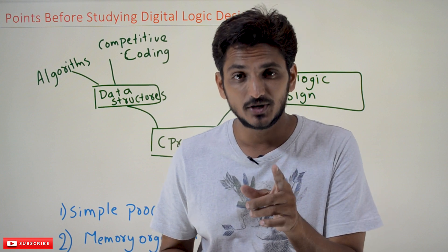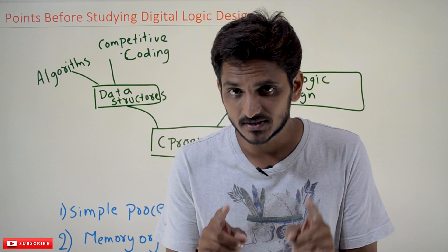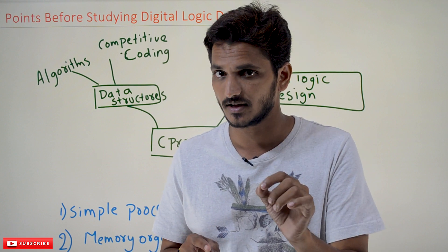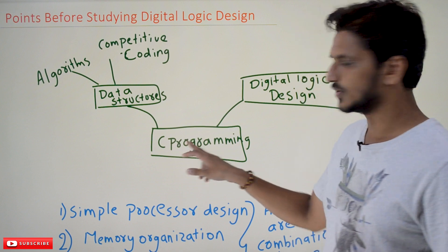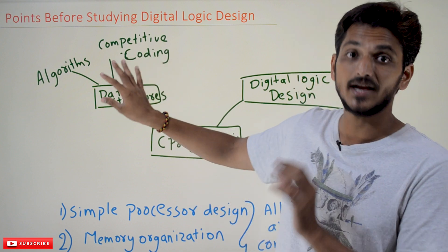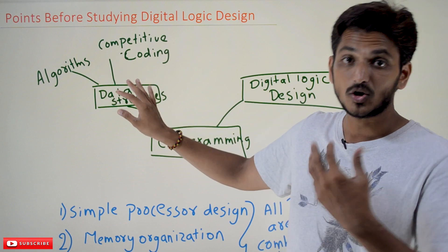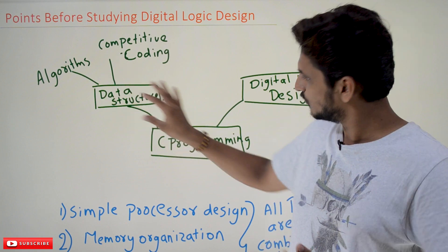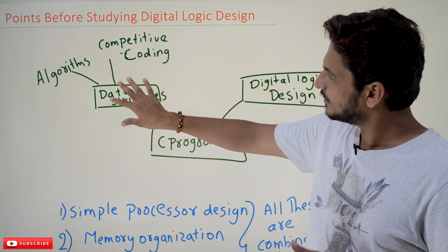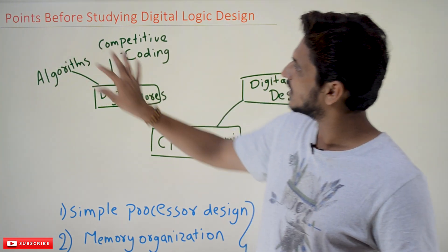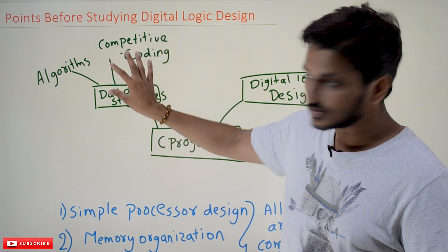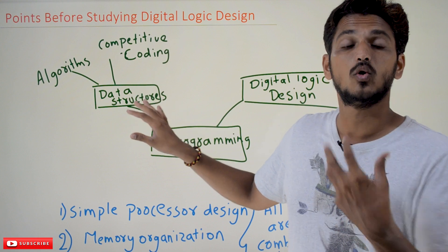In our last videos we clearly discussed that the first subject a computer science student is going to start his career with is C programming. After completion of C programming he moves on to study data structures, to improve his coding knowledge. After completion of data structures, you can move to algorithms and competitive coding according to your requirements. All these things work towards improving your coding skills.